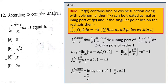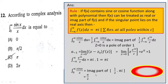So the integral from −∞ to ∞ of e^(iz)/z dz equals πi × 1 = πi. Therefore the integral from 0 to ∞ of sin(x)/x equals the imaginary part of half times πi, which gives π/2. So option B is correct.